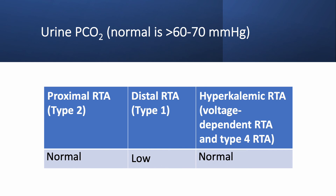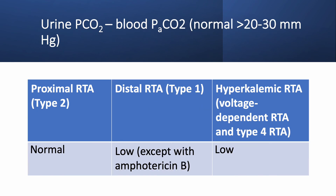If your center can measure urine PCO2, normal is over 60–70 mmHg. It is normal in proximal RTA and hyperkalemic RTA, but low only in distal RTA. Similarly, urine PCO2 minus blood PaCO2 is normally over 20–30; it is normal in proximal RTA but low in both distal and hyperkalemic RTA. One exception: patients with distal RTA due to amphotericin B may have a normal urine PCO2 minus blood PaCO2, meaning it could be over 20–30.